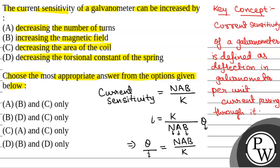If we decrease the number of turns of the coil, current sensitivity will decrease. So to increase the current sensitivity, we have to increase the number of turns, not decrease — so option A is incorrect. If we increase the magnetic field, current sensitivity will increase. If we decrease the area of the coil, then current sensitivity will decrease. And if we decrease the torsional constant of the spring, then current sensitivity of the galvanometer will increase.